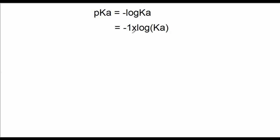pKa is defined as the negative log of the Ka value. More specifically, it's negative one times the log of the equilibrium constant for an acid.